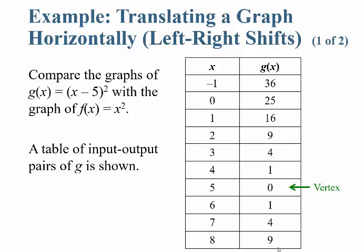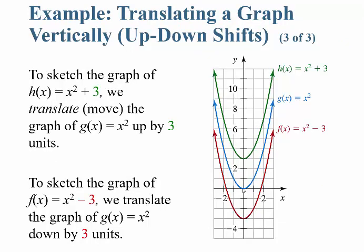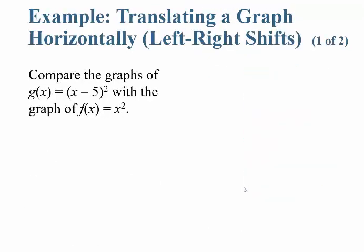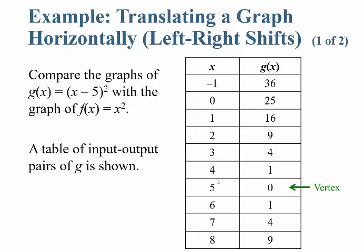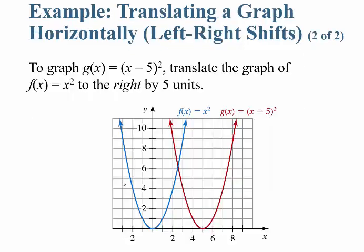The output values go lower then higher, so it looks like the vertex, which was at 0, 0, has been moved over 5 units to the right. When you sketch the graph of g of x here, it translates or moves the graph of f of x equals x squared to the right five units.